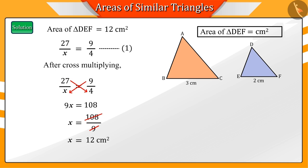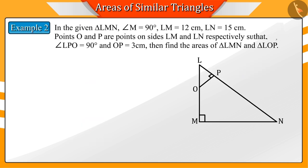Let's see another example. In the given triangle LMN, angle M is 90 degrees, LM equals 12 centimeters and LN equals 15 centimeters.